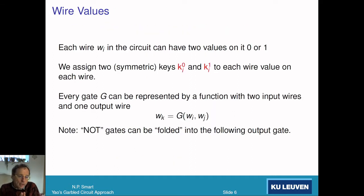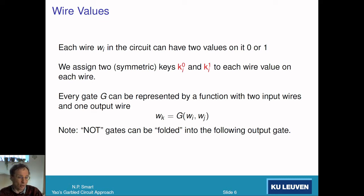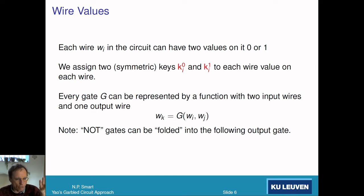For each wire wi in the circuit, in the real world it has two possible values: zero or one. We're going to associate those values to two symmetric keys, called wire labels. For circuit wire wi we have wire label ki0, which corresponds to the zero value, and ki1, which corresponds to the one value. The idea is that if you learn ki0 you don't actually know it's ki0, because ki0 and ki1 are indistinguishable — they're just random labels. The person who created the encryption knows that ki0 corresponds to zero and ki1 corresponds to one, but the evaluator doesn't.